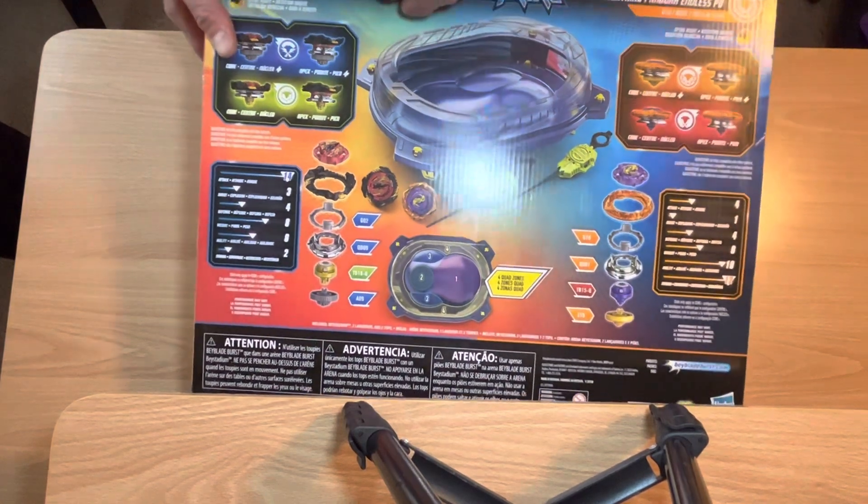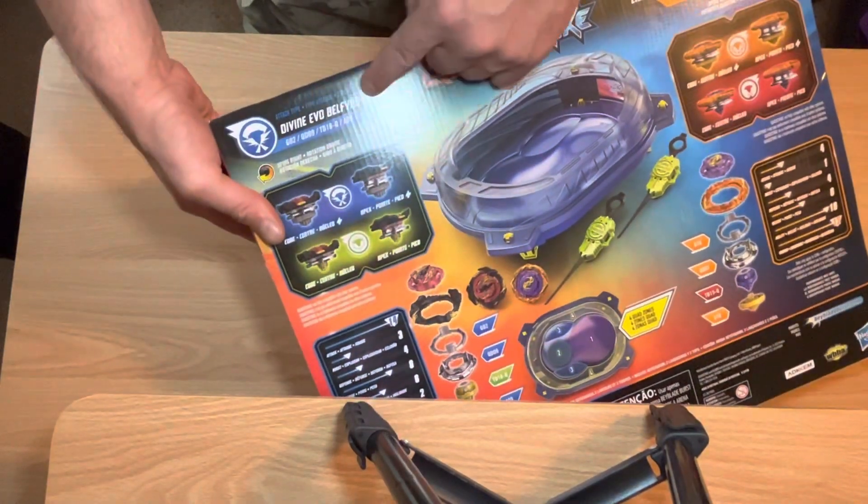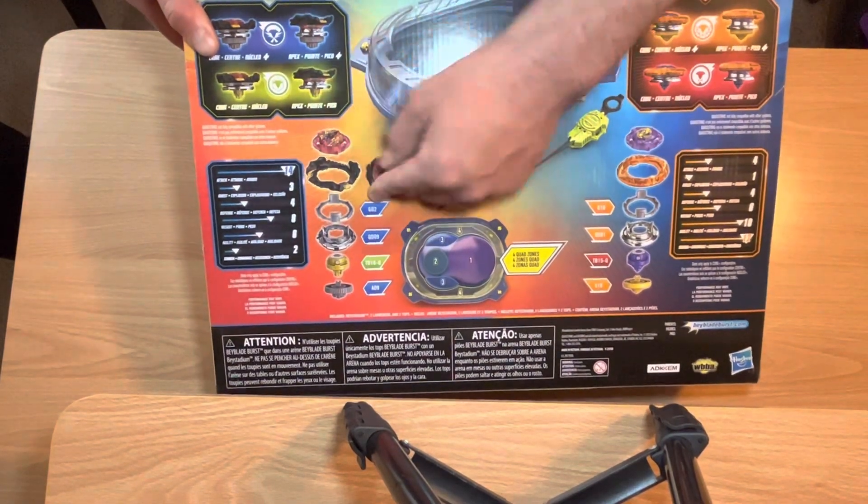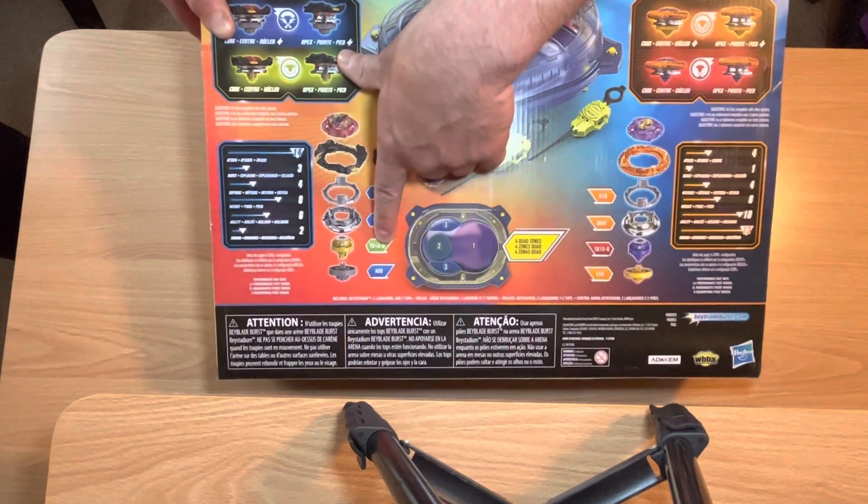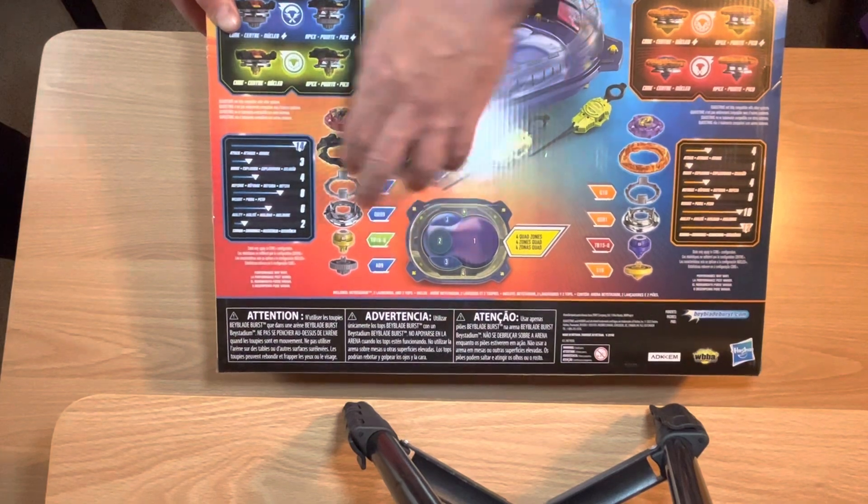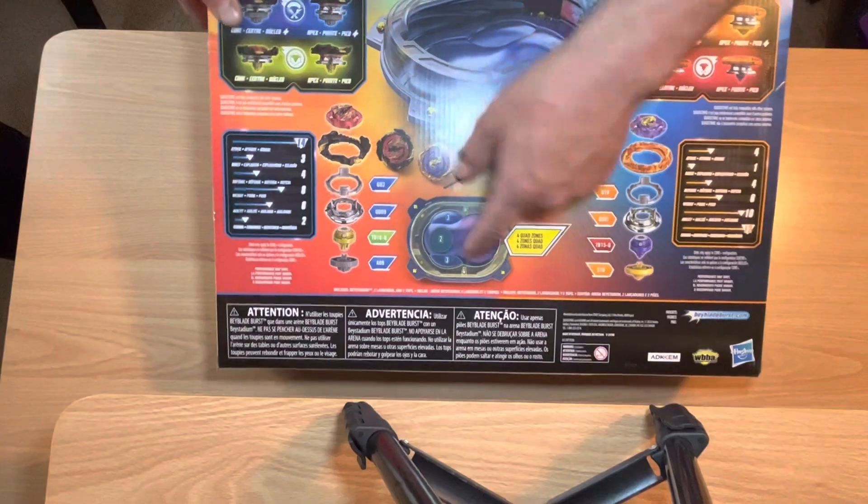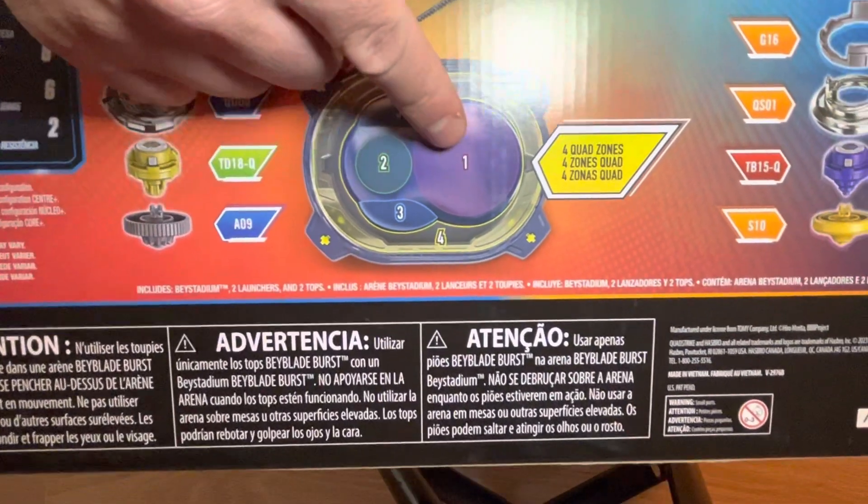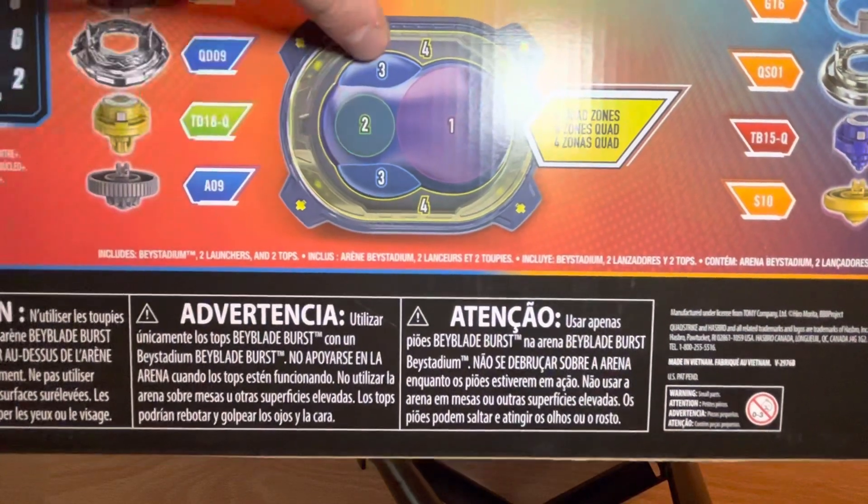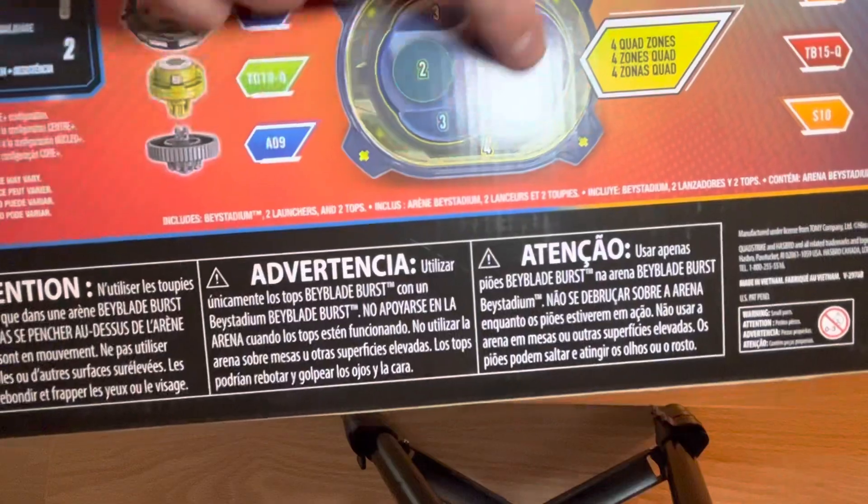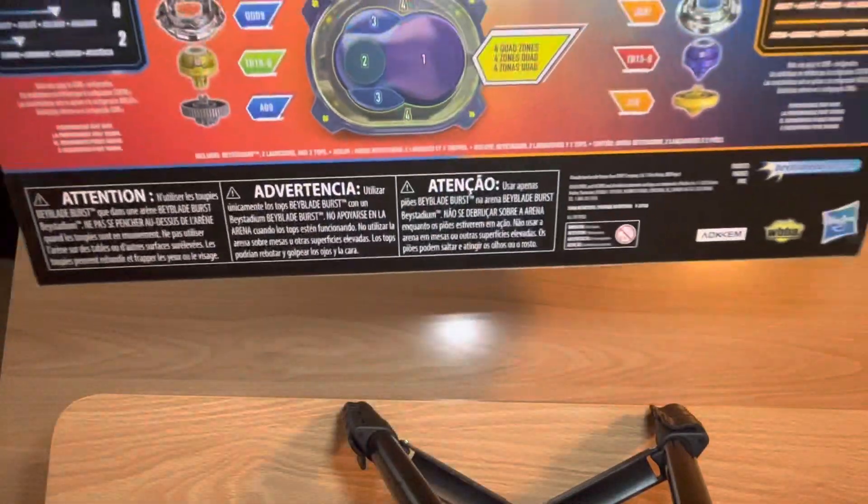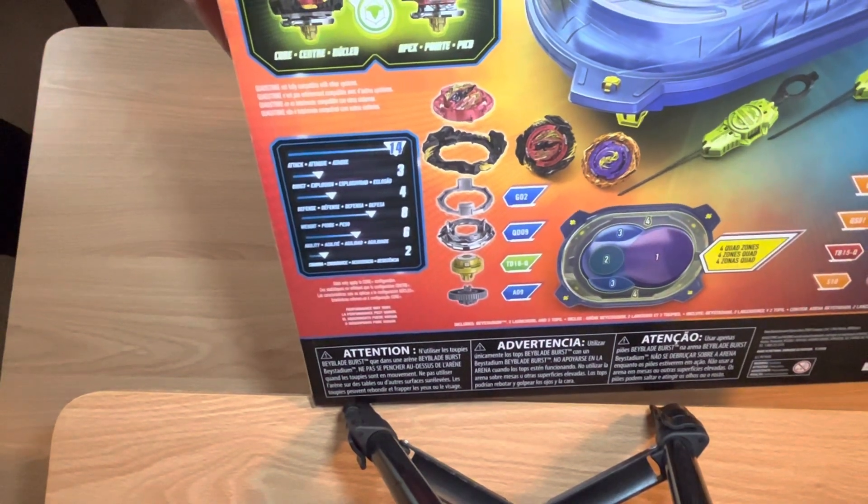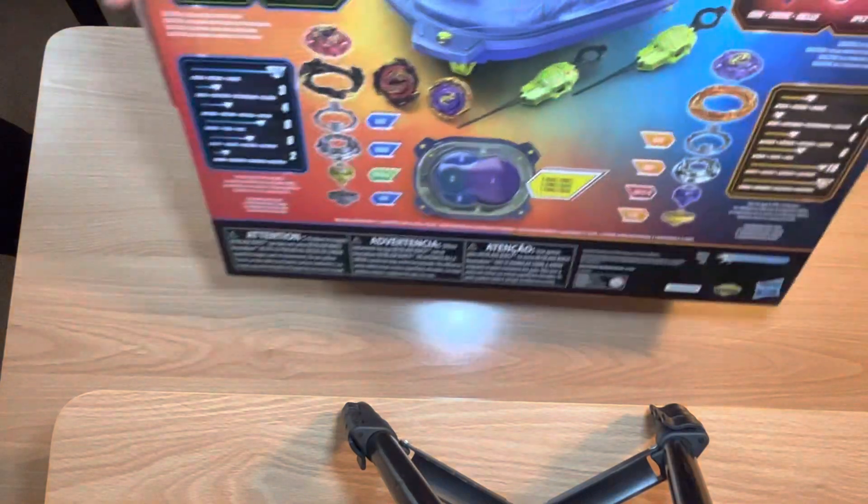Now moving over, we have Divine Evo Belfire. So we have the Evo Belfire chip, the Divine Lair, the GO2 armor, the QD09 disc, the TD18-Q, the AO9 armor tip for the driver. Here is the stadium. We have three zones, technically four zones to play in. The first zone which is the main zone, then we have what looks like it might be a lower zone for three, a smaller circle, and then the outer edge of the stadium itself. So super stoked. Here's the stats for Lightning Pandora, and here are the stats for Divine Evo Belfire. That is a mouthful. So let's get this unboxed.